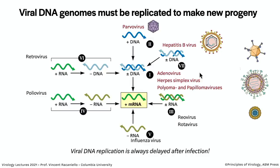Today we're going to be talking about these DNA viruses on the Baltimore scheme: the parvoviruses with single-stranded DNA. We're not going to talk about hepatitis B virus because we'll cover it next time when we discuss reverse transcription. Then we'll talk about adenoviruses, herpes, polyoma and papilloma — the group seven with double-stranded DNA. Remember: viral DNA replication is always delayed after infection, which is why transcription comes first.